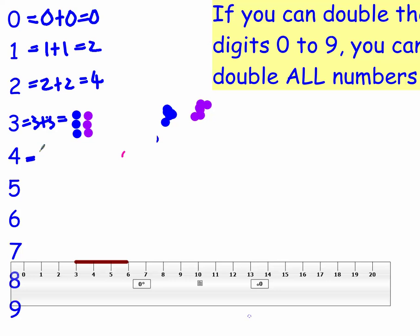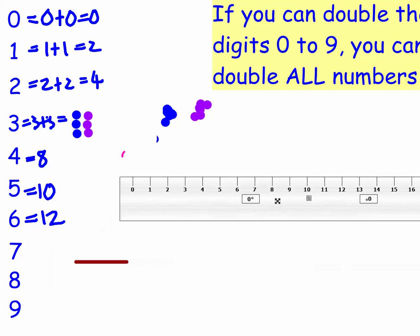If you carry on doing that, what you're going to find is doubling 4 gives you 8, doubling 5 gives you 10, doubling 6 gives you 12, doubling 7, let's move that out of the way and wipe off our line. Doubling 7 gives you 14, doubling 8 gives you 16, and doubling 9 gives you 18.